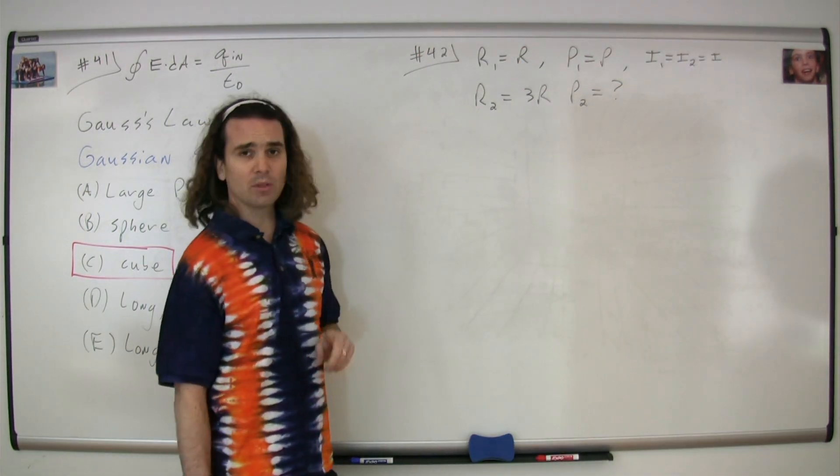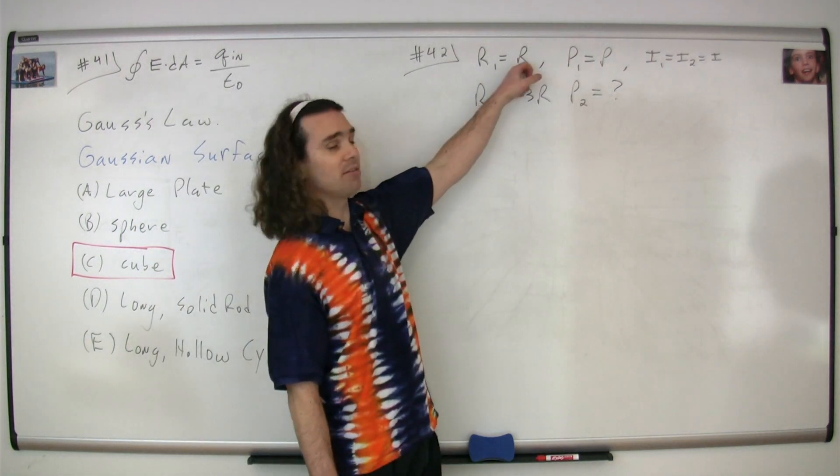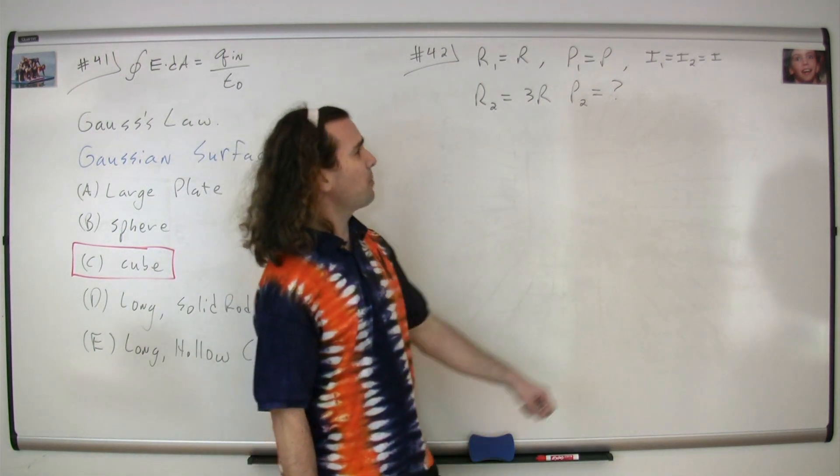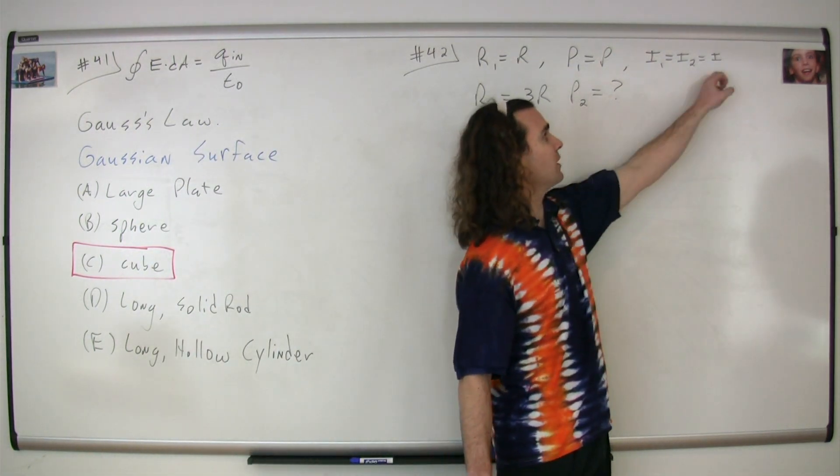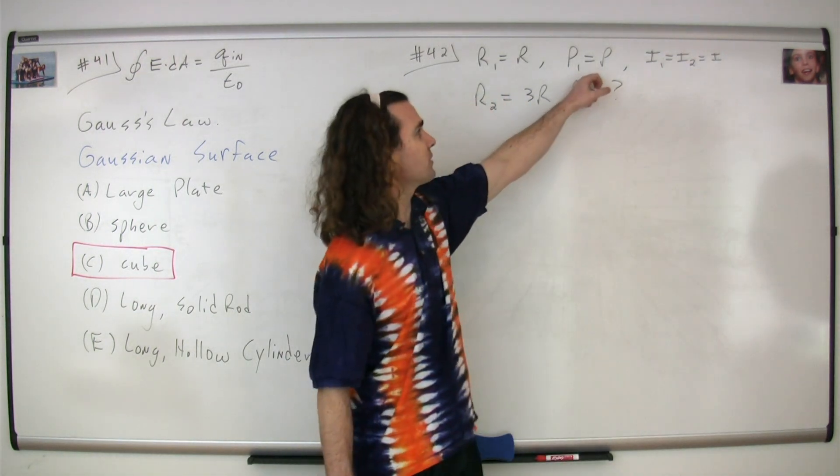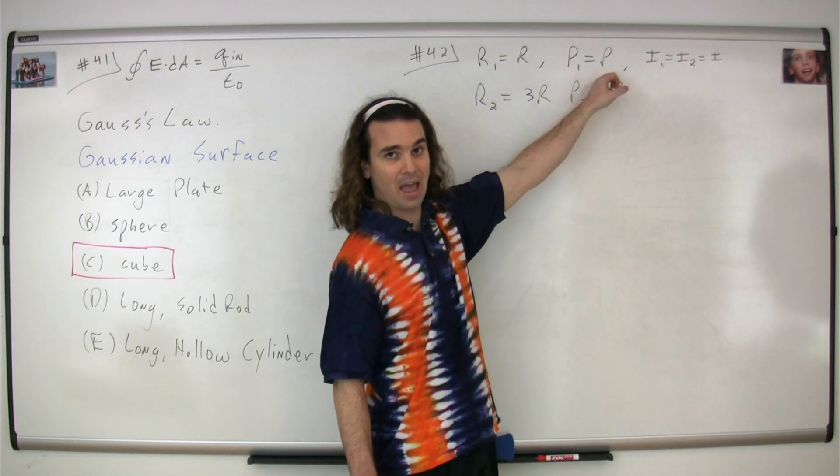Question 42. We start with wire 1, which has a resistance of capital R, and we're going to pass a current through wire 1 which has a current of capital I. The power dissipated by wire 1 is capital P.